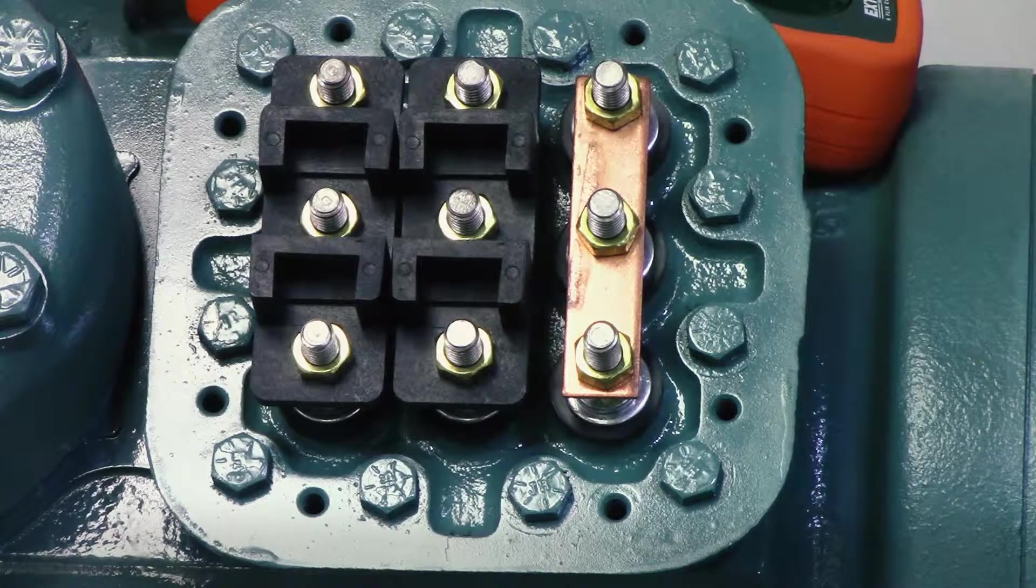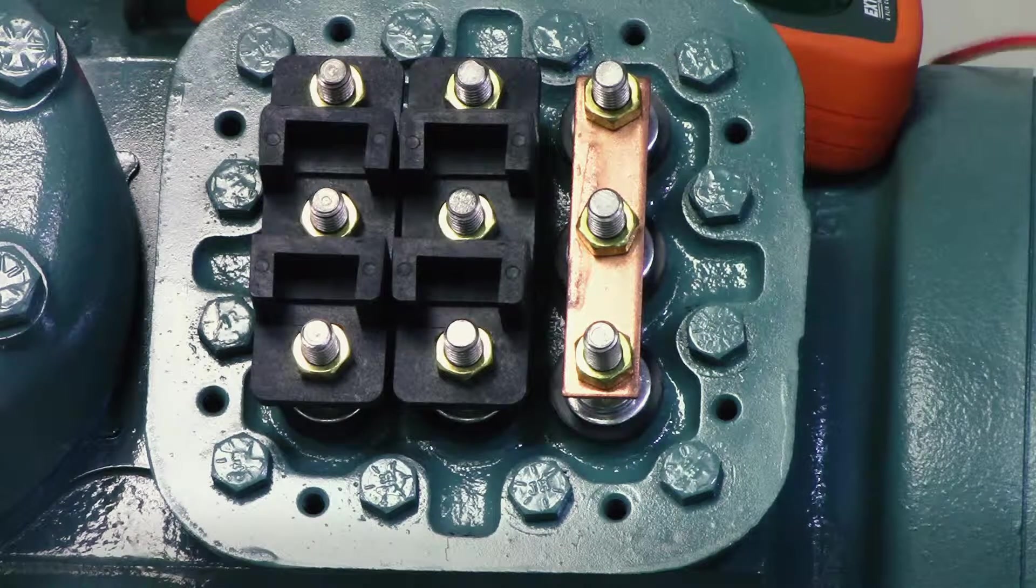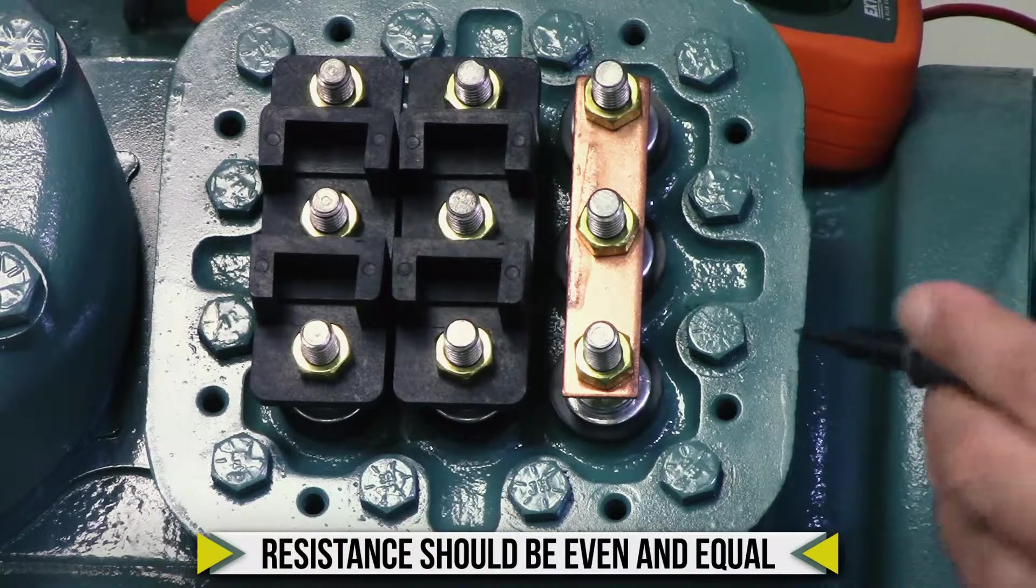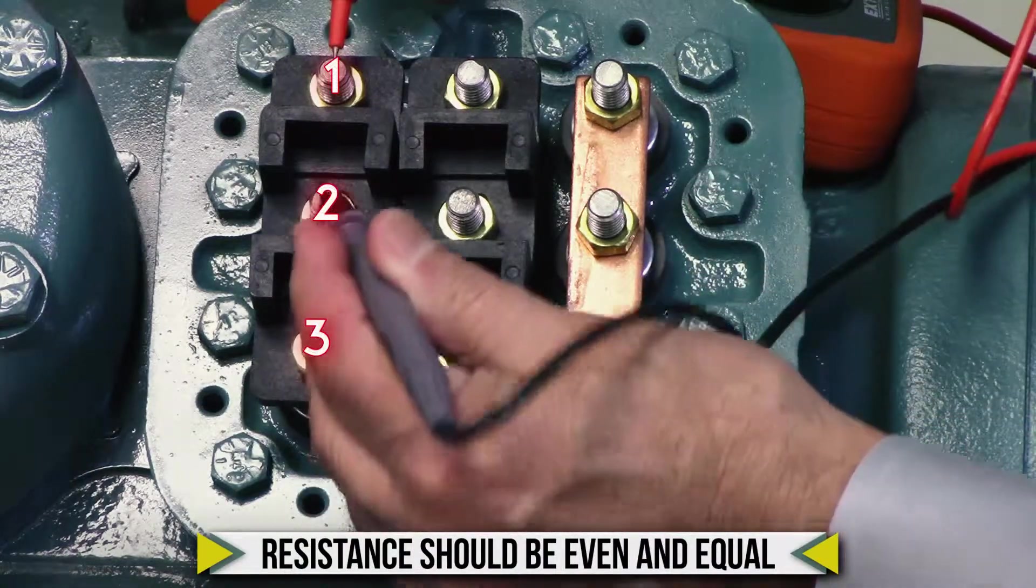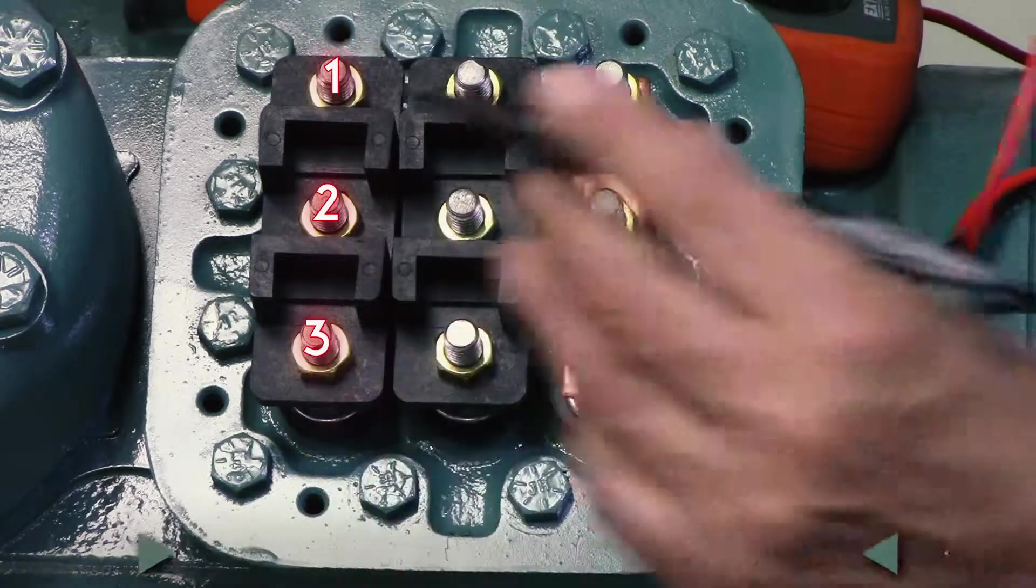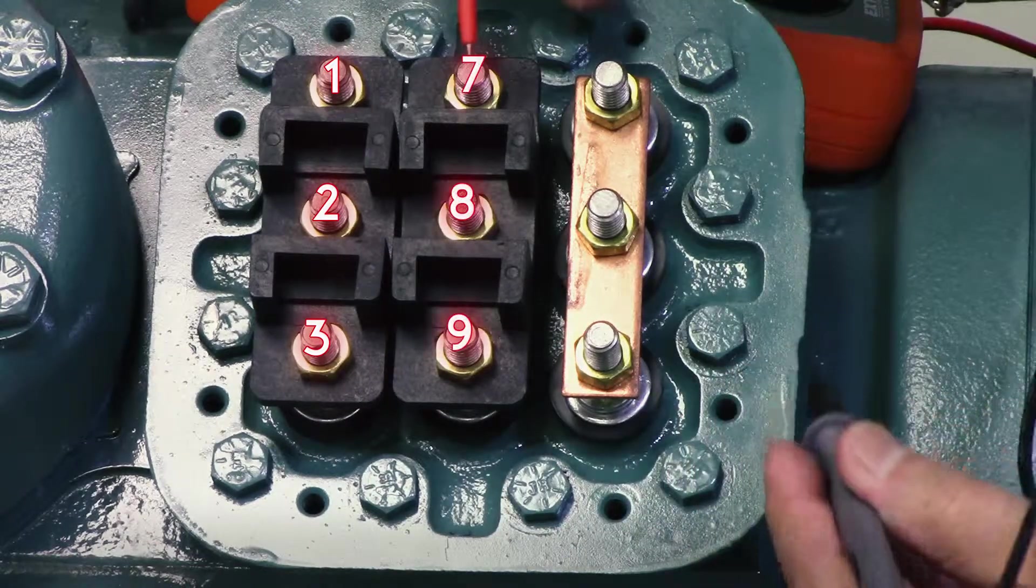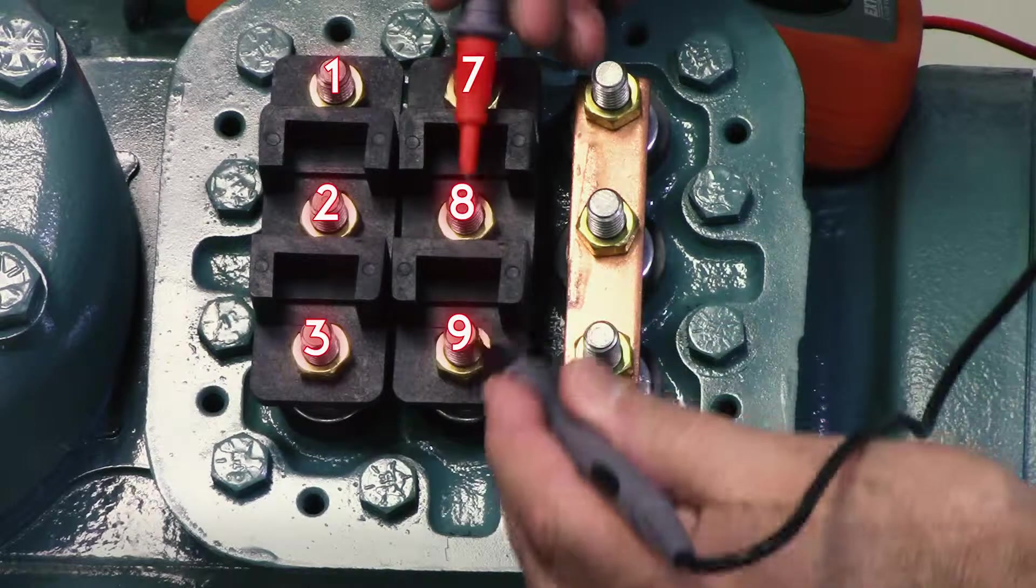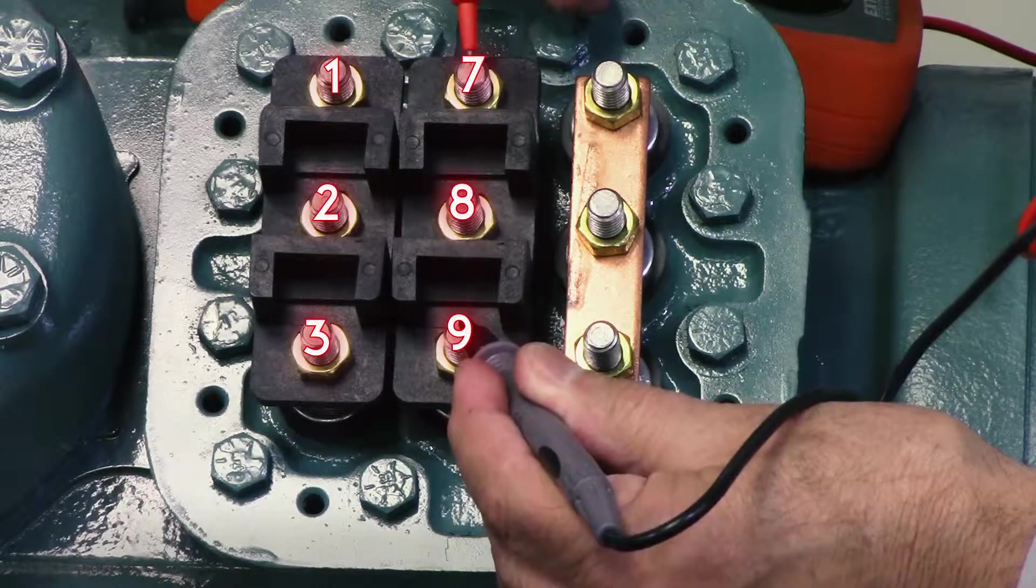Now when you're doing your resistance, what you do is one to two, two to three, three to one, record the resistance. Then you do seven to eight, eight to nine, and nine to seven.